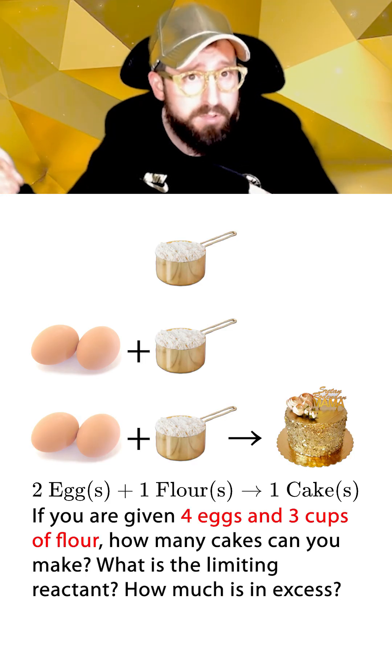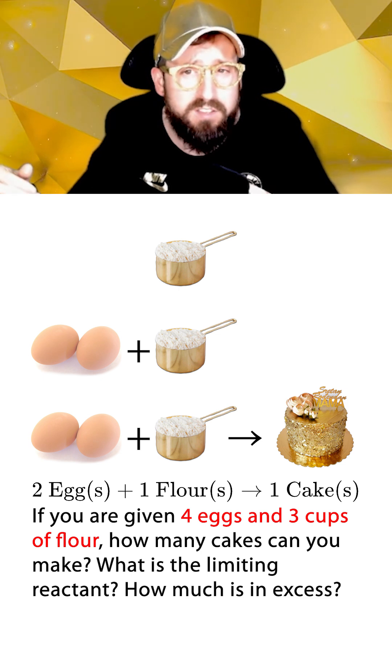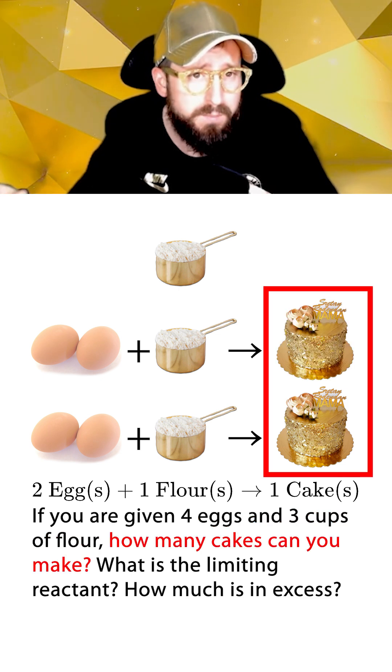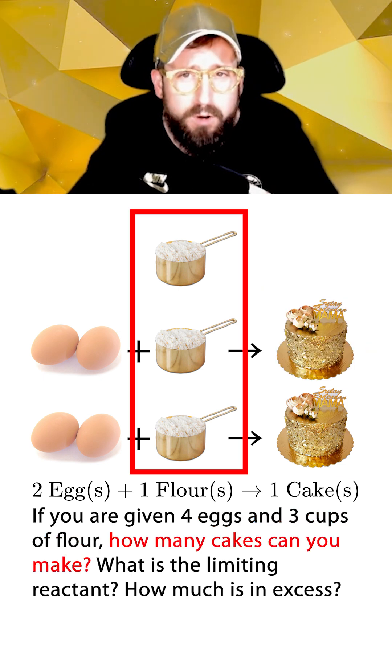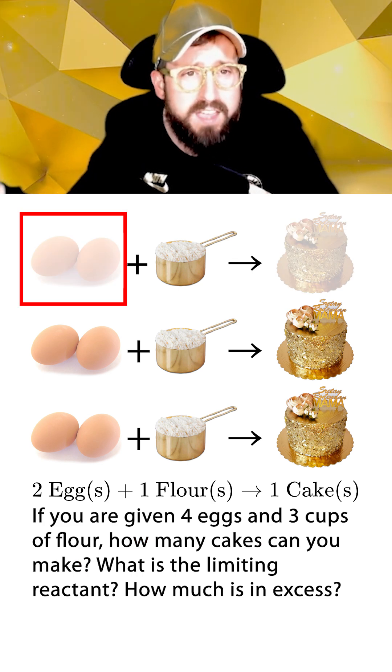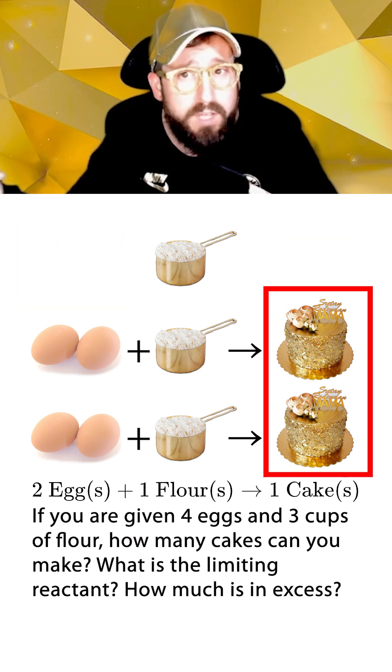If we're given four eggs and three cups of flour as our starting amounts, it's pretty obvious to see here that we could only make two cakes. This is because even though we have enough flour to make three cakes, we're going to run out of eggs first, because we need to use all four eggs to bake only two cakes.